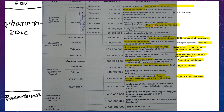Next is Neogene period. In Neogene period, two epochs are there: Miocene and Pliocene. In Miocene, apes flourish and savanna grazing animals evolved. In Pliocene, near-human species called hominids and other near-modern mammals appear.